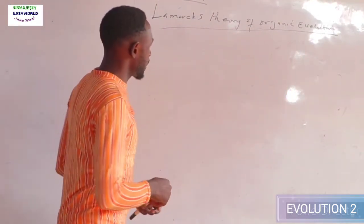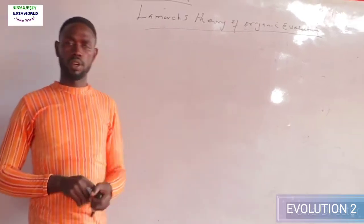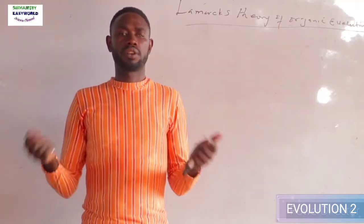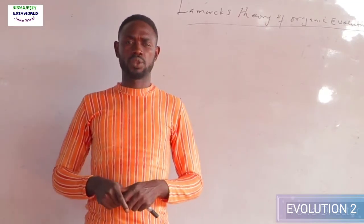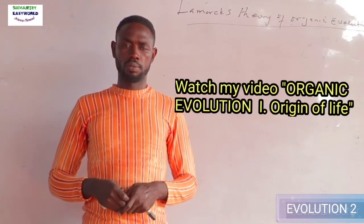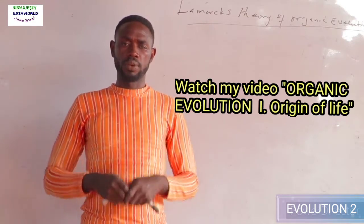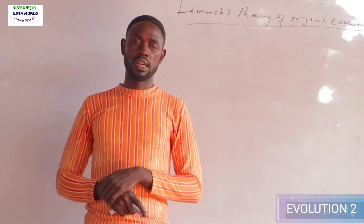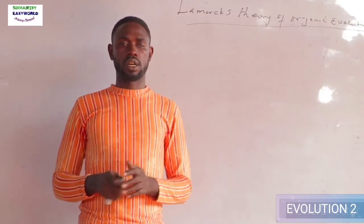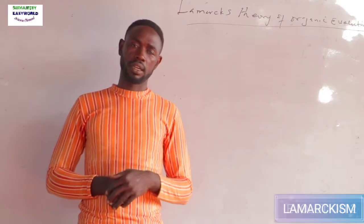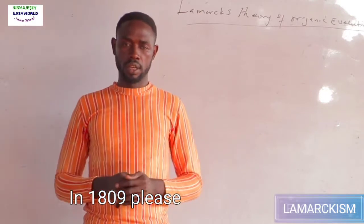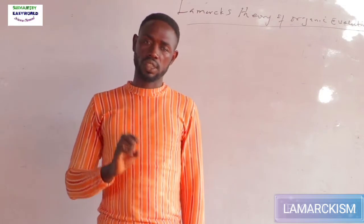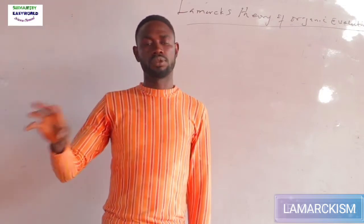Jean-Baptiste Lamarck was actually the first to summon the courage to tell people that God did not create everything the way they are. He tried to use another means to explain how some organisms come to be and how they develop certain structures. This theory, also called Lamarckism, was propounded around 1801. I'll give you the summary of his theory and then discuss it under three sub-theories.